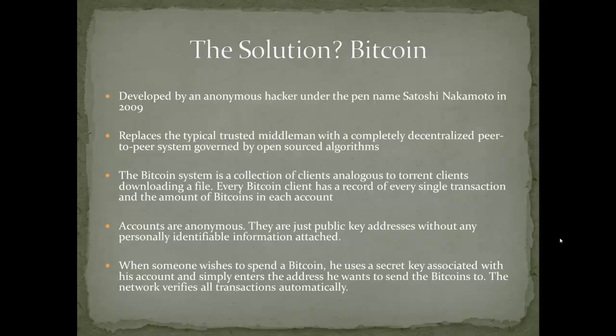When someone wishes to spend a Bitcoin, all you have to do is use a secret key associated with your public key address and send it to someone else's account. You click a button — it's very similar to sending an email. Sending a Bitcoin to somebody is completely anonymous for the most part, entirely transparent, the rules are absolute and set in stone, there's no way to cheat them without breaking the entire system, and no one entity can control it. That is Bitcoin in a high-level nutshell.